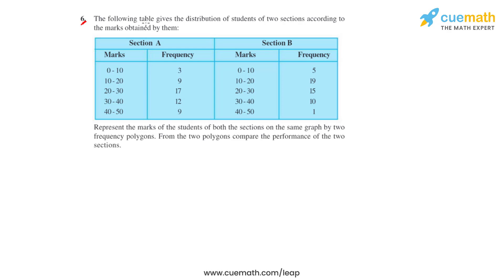Question number 6 says that the following table gives the distribution of students of two sections according to the marks obtained by them. We have Section A and Section B. Marks have been divided into class intervals like 0 to 10, 10 to 20, 20 to 30, 30 to 40, 40 to 50. With each of these class intervals, they have given us the frequency, that is how many students fall into that class interval.